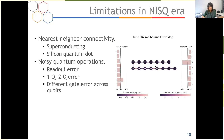The second limitation is noisy quantum operations, including readout error, one-qubit error, and two-qubit error. The gate error is different across qubits — each block has a different length representing different readout errors, and each link has a different color representing different CNOT error rates. We cannot treat them equally.